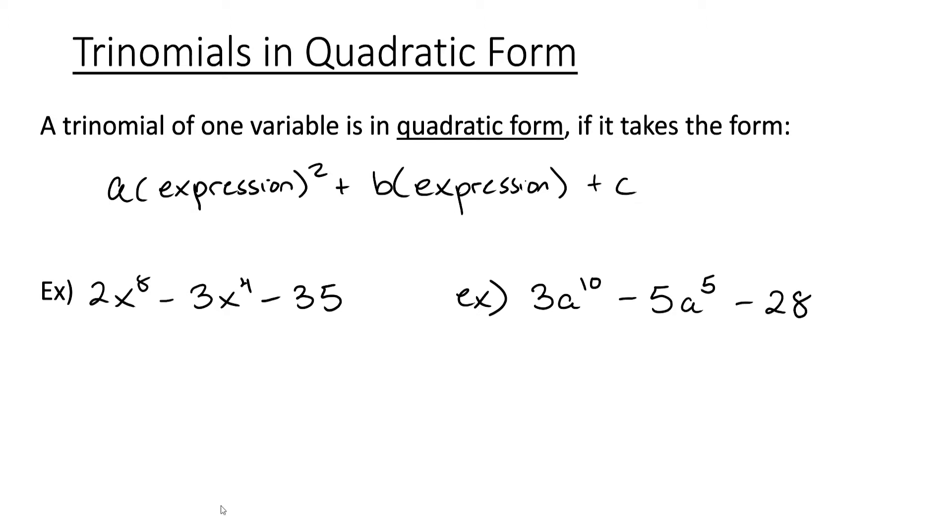We'll look at two examples of this here. Here we see 2x to the eighth. We could rewrite this as 2x to the fourth squared, then we have minus 3x to the fourth minus 35. So here our expression is x to the fourth.